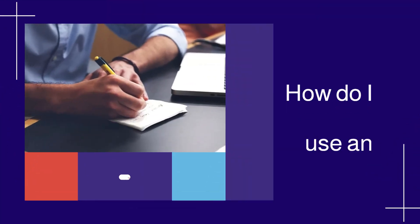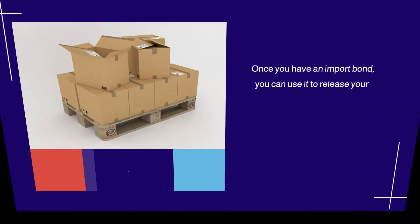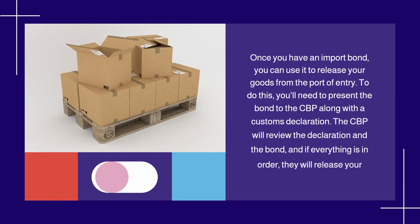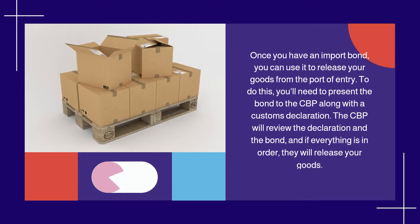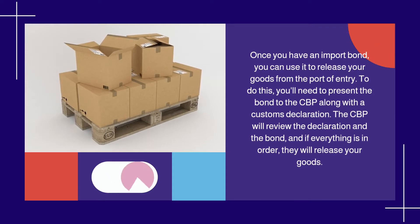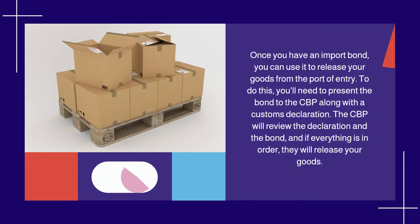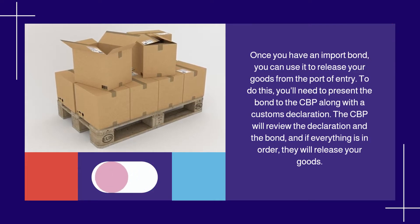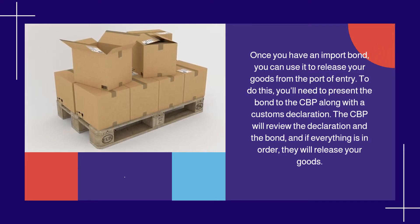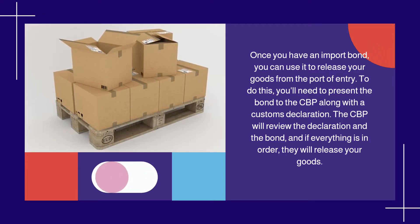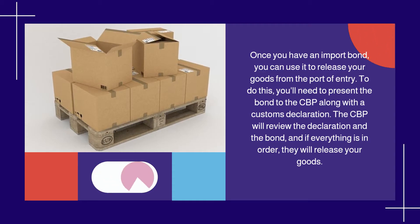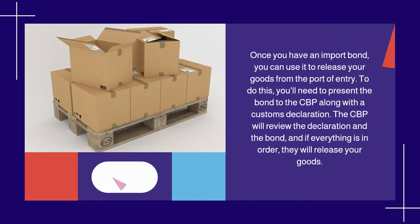How do I use an Import Bond? Once you have an Import Bond, you can use it to release your goods from the port of entry. To do this, you'll need to present the bond to the CBP along with a customs declaration. The CBP will review the declaration and the bond, and if everything is in order, they will release your goods.